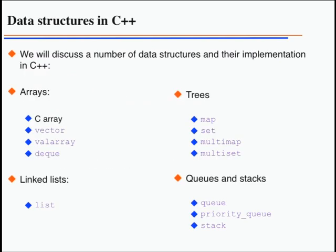Now we go to something more complex: data structures in C++. We look at array-type classes, linked lists, trees, queues, and stacks. Most of you will have heard about data structures already.